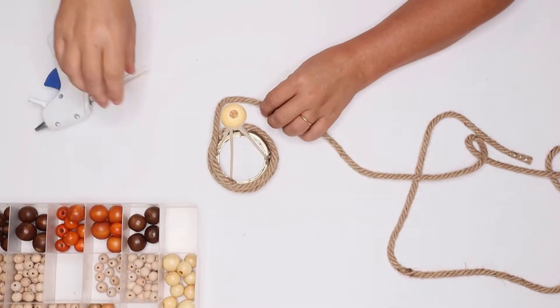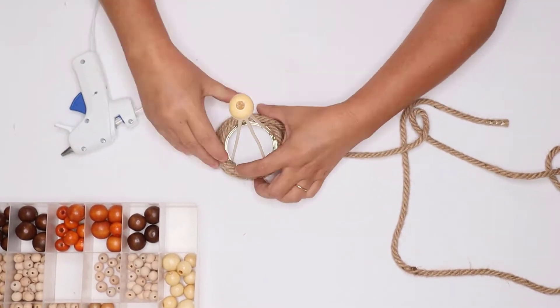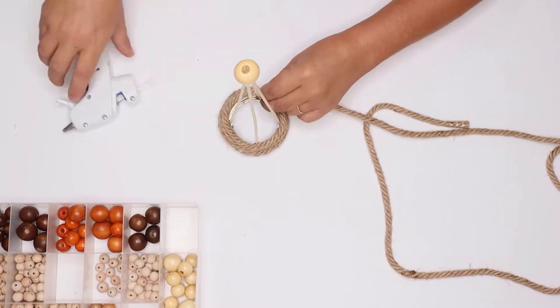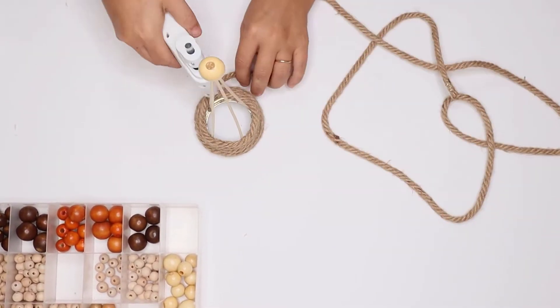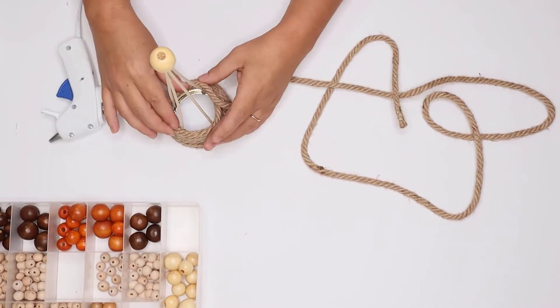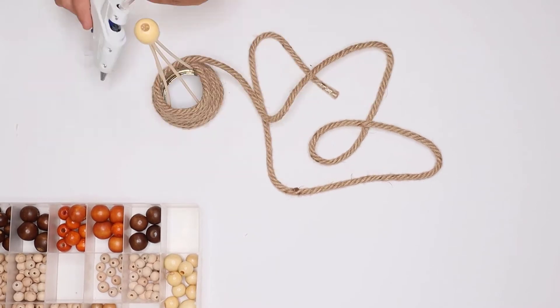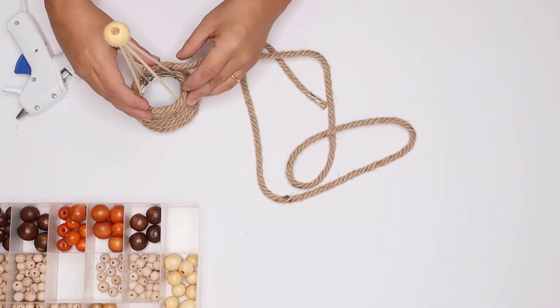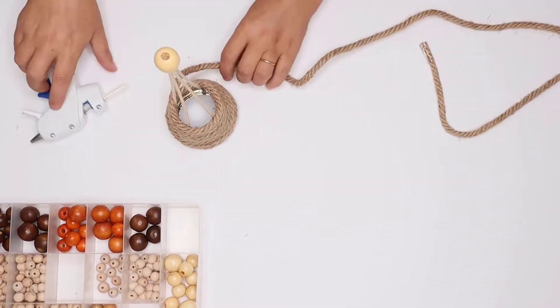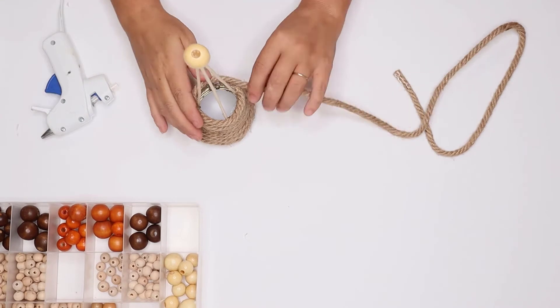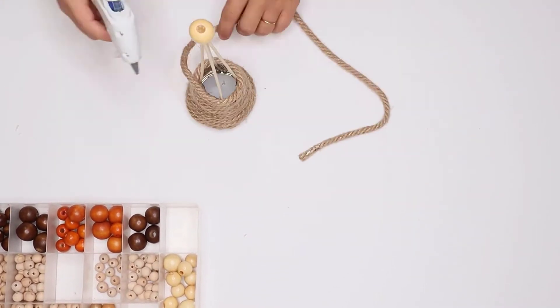And then I added hot glue to the skewers and started wrapping the rope around it.